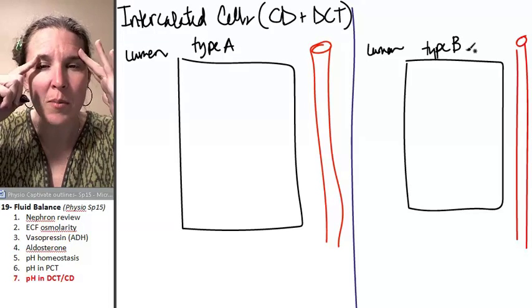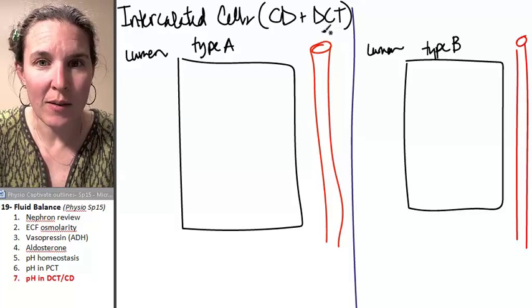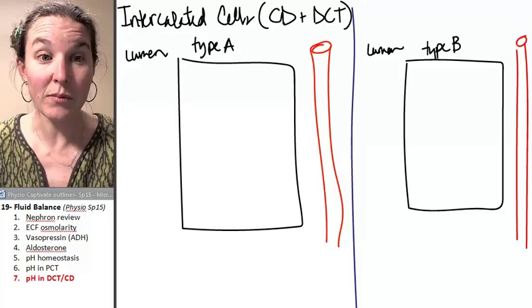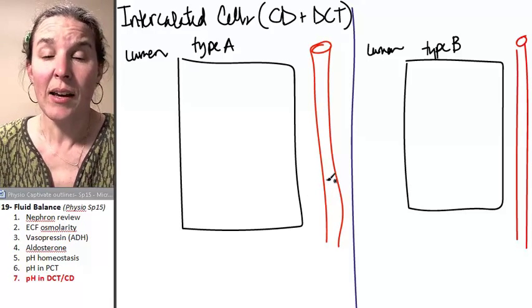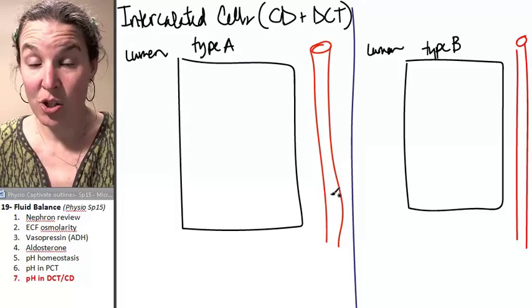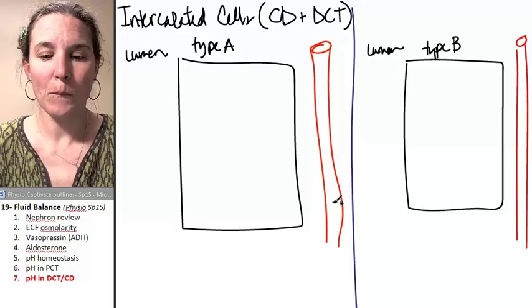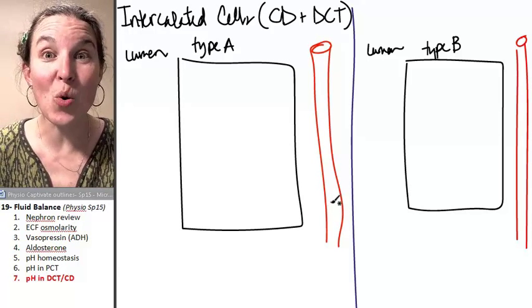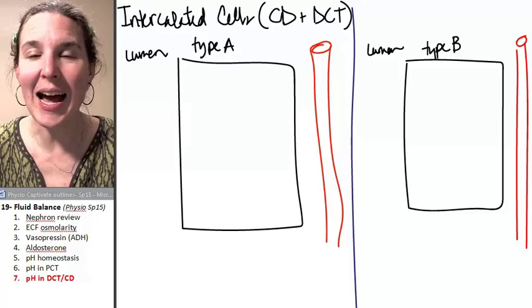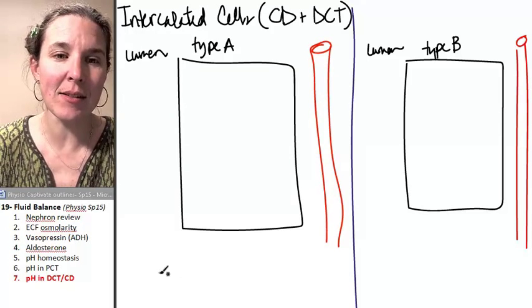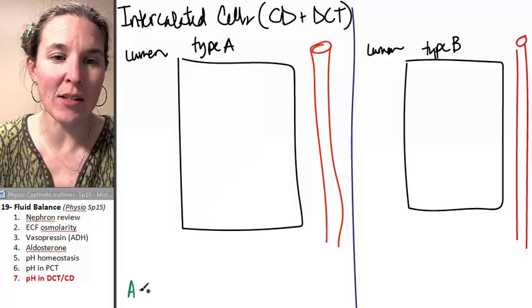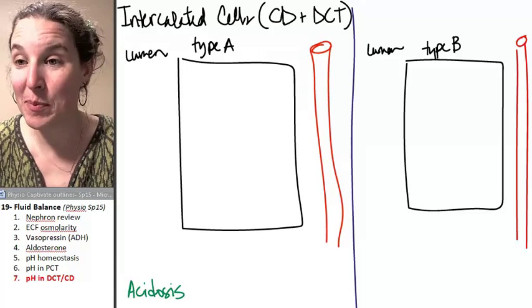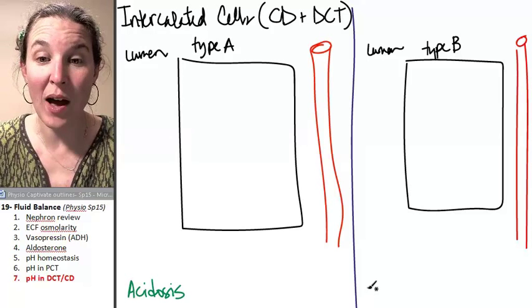But remember, they're all found scattered all around in the collecting duct and the distal convoluted tubule. And their whole goal is to react to changes in pH. And the cool thing is type A cells react to acidosis.